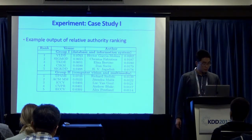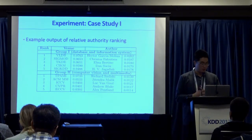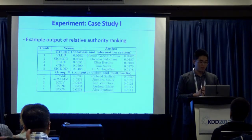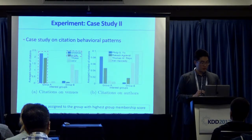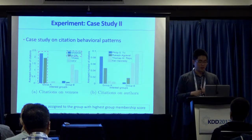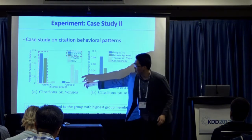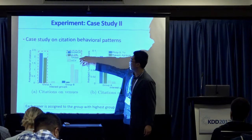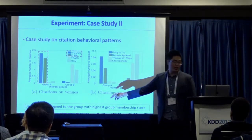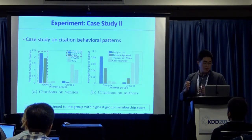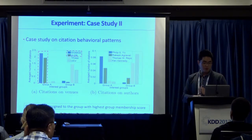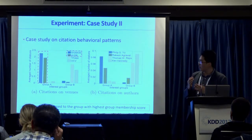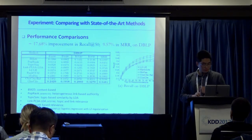We show two groups. Group one gives high authority scores to database conferences including VLDB and SIGMOD, and high scores to familiar names in the database community like Christos Faloutsos and Hector. Group two focuses more on computer vision, with high authority on journals like PAMI and multimedia, and high scores on computer vision researchers. We also validate that we can derive meaningful interest groups by looking at how they cite different venues — group A cites much more database conferences, group B cites more computer vision conferences. The chart also shows different author preferences across groups.